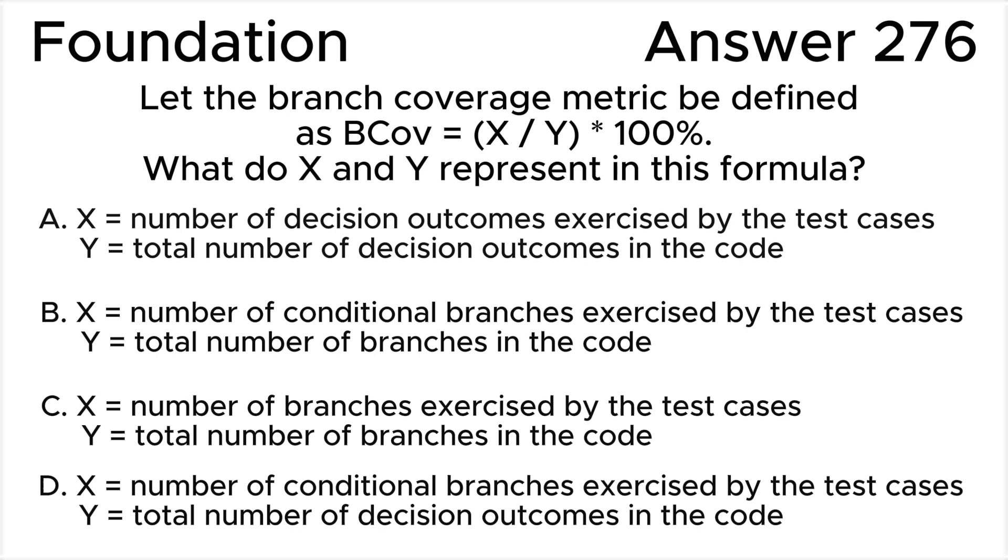Each transfer of control can be either unconditional (straight line code) or conditional (a decision outcome). Coverage is measured as the number of branches exercised by the test cases divided by the total number of branches, and is expressed as a percentage.